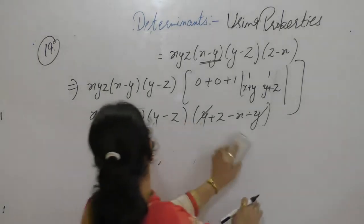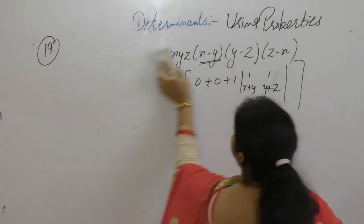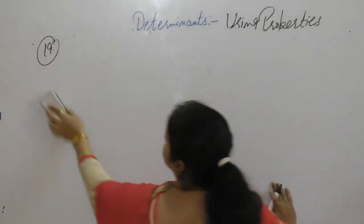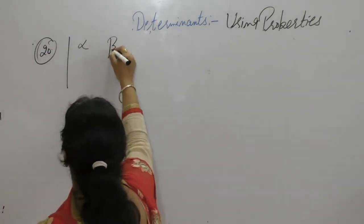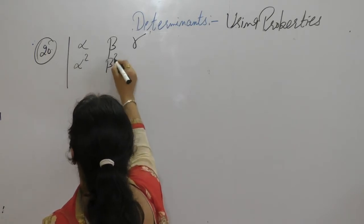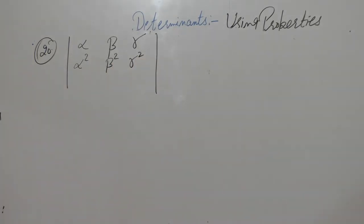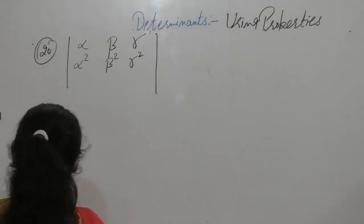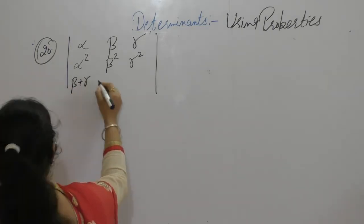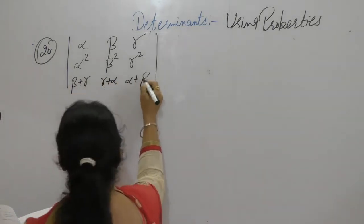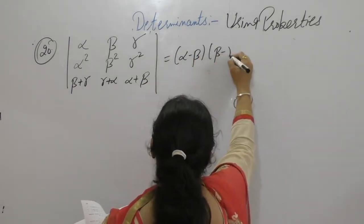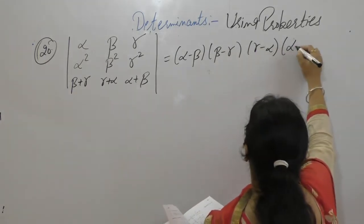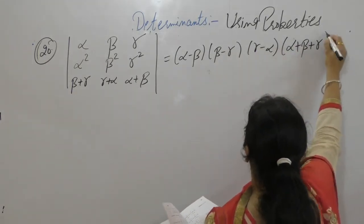Next one is question number 20. Prove that the determinant with rows α, β, γ; α squared, β squared, γ squared; α squared, β squared, γ squared — with the third row being β plus γ, γ plus α, α plus β — equals (α minus β)(β minus γ)(γ minus α) times (α plus β plus γ).